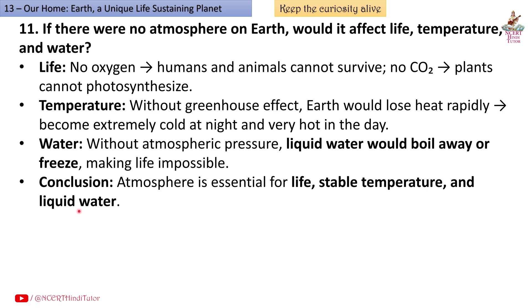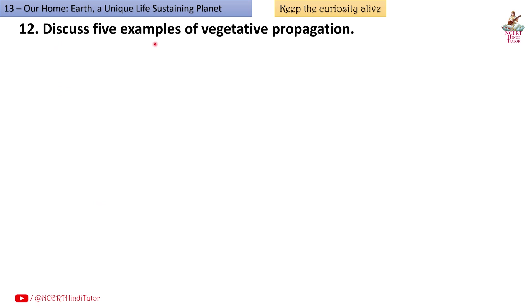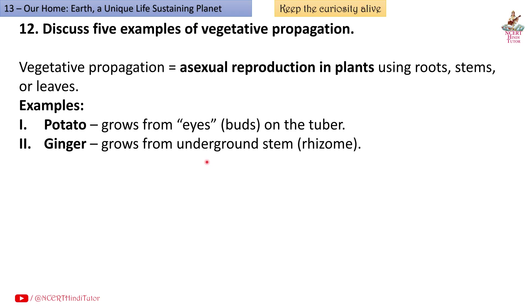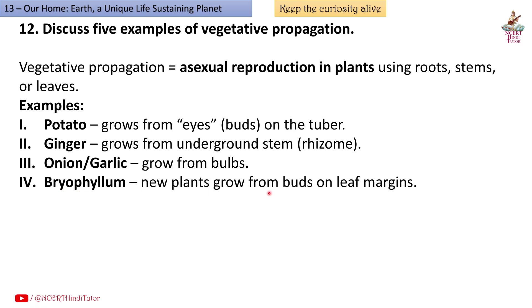Question 12: Discuss 5 examples of vegetative propagation. Answer: Vegetative propagation is asexual reproduction in plants using roots, stems or leaves. Examples: First, potato - grows from eyes, buds on the tuber. Second, ginger - grows from underground stem, rhizome. Third, onion, garlic - grow from bulbs. Fourth, bryophyllum - new plants grow from buds on leaf margins. Fifth, money plant - grows from stem cuttings placed in soil or water.